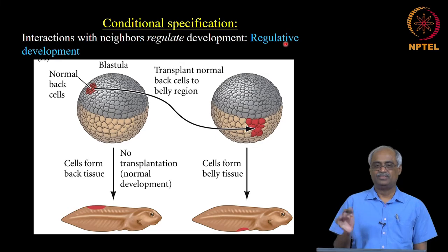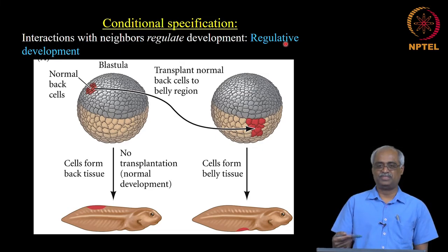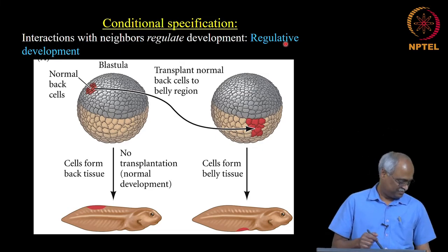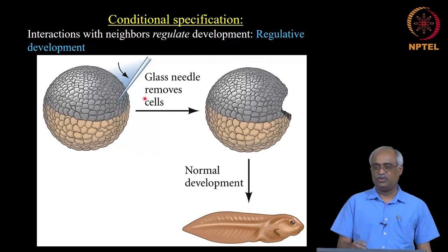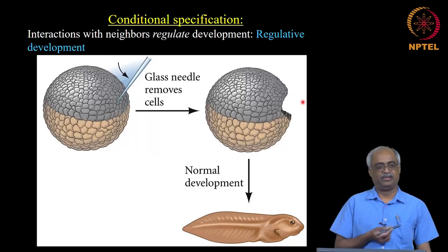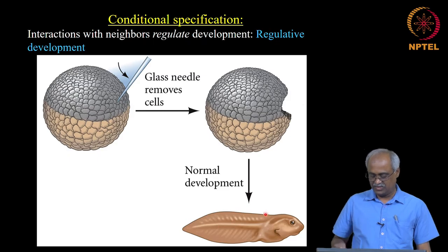So: autonomous specification leads to mosaic development; conditional specification leads to regulative development. In regulative development, if you remove a cell, the rest of the embryo can regulate and form a normal structure — unlike in the mollusk where only that piece is missing.